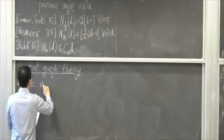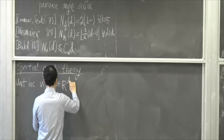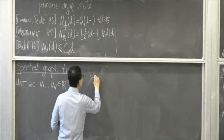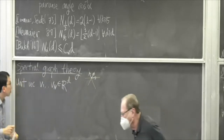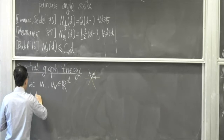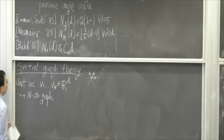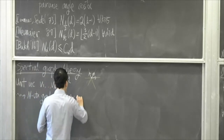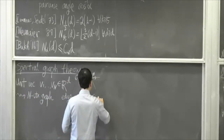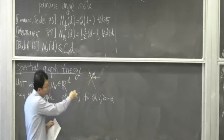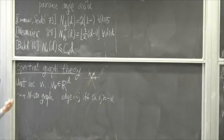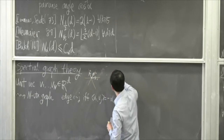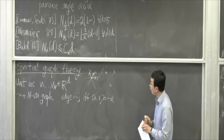Given a set of unit vectors v_1 through v_n in D dimensions — thinking of these as one unit vector chosen for each line — I can form an N-vertex graph. The vertices correspond to the vectors, and there is an edge between i and j if and only if the angle between them is obtuse, meaning the inner product is −alpha. So the inner product can be either +alpha or −alpha, and I record the sign in the graph.